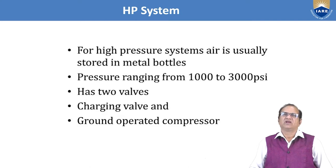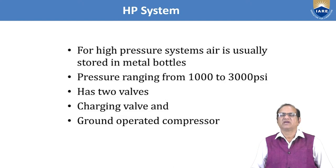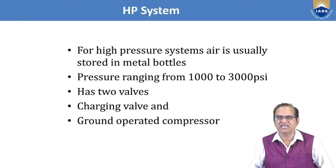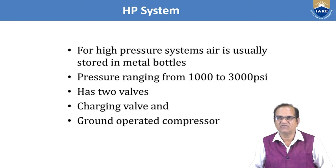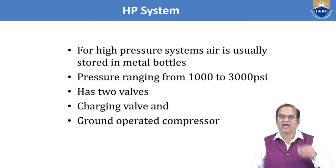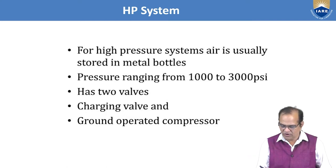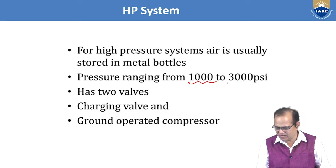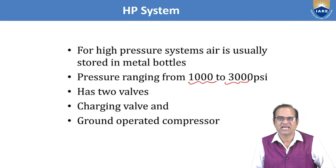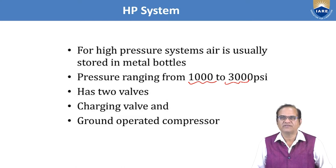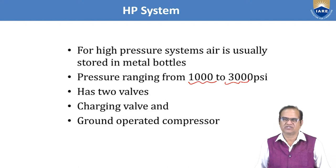For the high pressure system, air is usually stored in metal bottles with pressure ranging from 1000 to 3000 psi. This has two valves: one is the charging valve and the second is the ground operating compressor. So the high pressure range is 1000 to 3000 psi, and it contains a charging valve and a ground-operated compressor system.